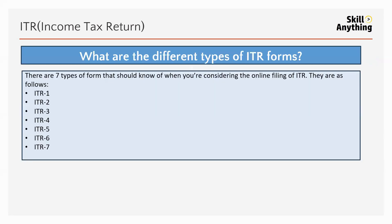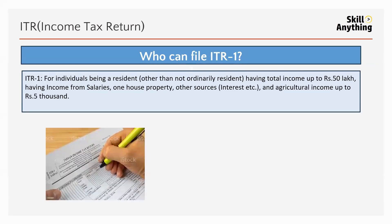Types of ITR forms — there are seven types, as you can see: income tax return one, income tax return two, income tax return three, income tax return four, income tax return five, income tax return six, and income tax return seven.